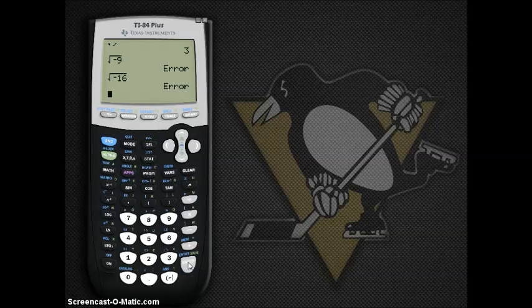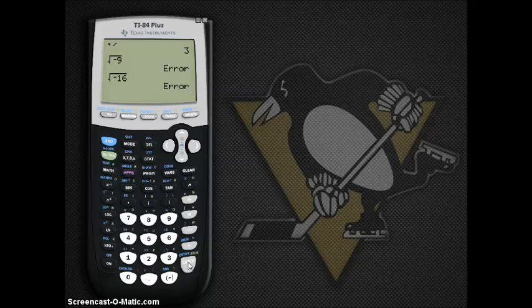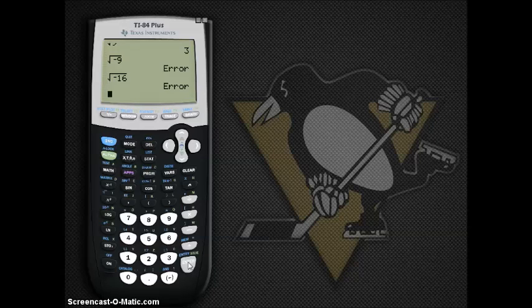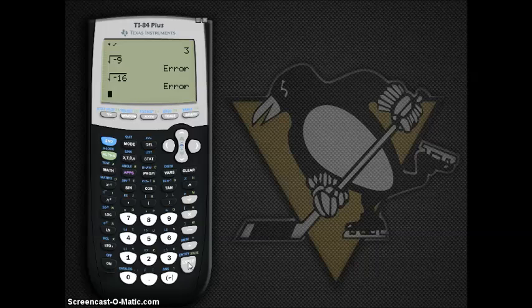Because there's no number that I can square to get negative 16. I can't square negative 4 because that's negative 4 times negative 4 is positive 16. And I can't square positive 4 because that gives me a positive 16 as well. So we have to figure out some way to handle square rooting a negative number.